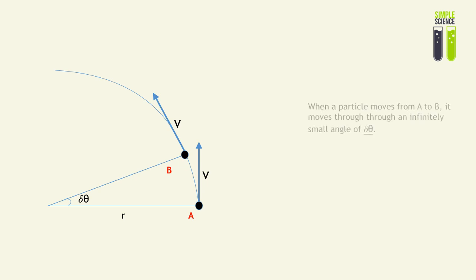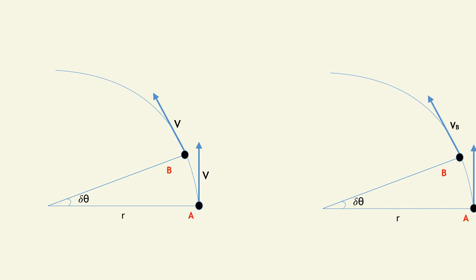When a particle moves from A to B, it moves through an infinitely small angle of delta theta. We're looking at small arc length. And since it is moving through an infinitely small angle, in circular motion it is moving through a time of delta t.